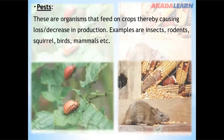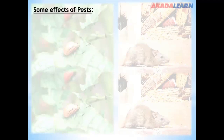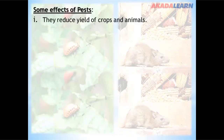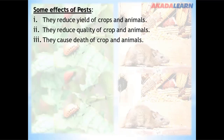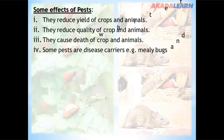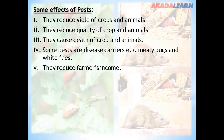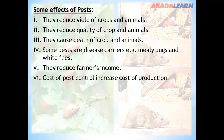The effects of pests on agricultural production: they reduce the yield of crops and animals; they reduce quality of crops and animals; they cause death to crops and animals. Some pests are disease carriers — for example, mealybugs and whiteflies. They reduce farmers' income, as when yield is reduced, income is automatically affected. The cost of pest control also increases the cost of production.